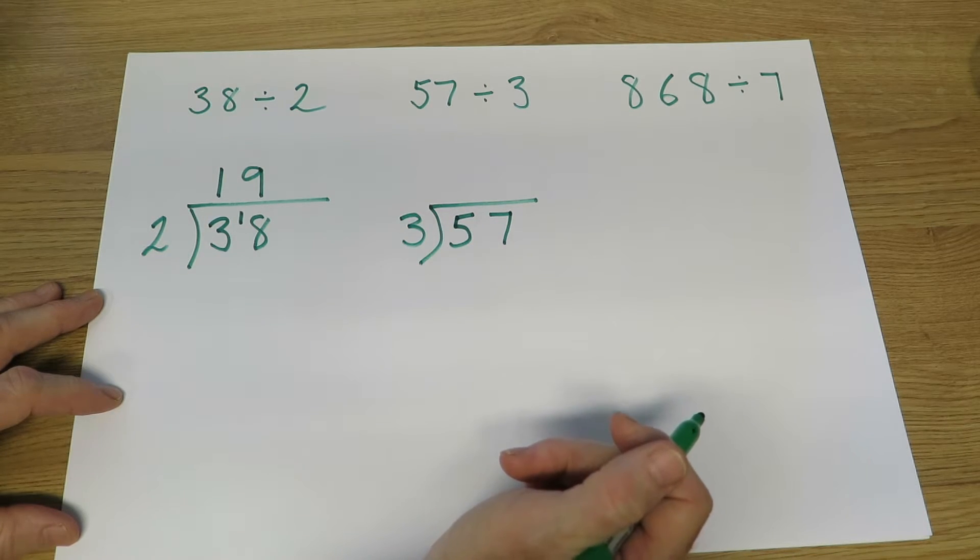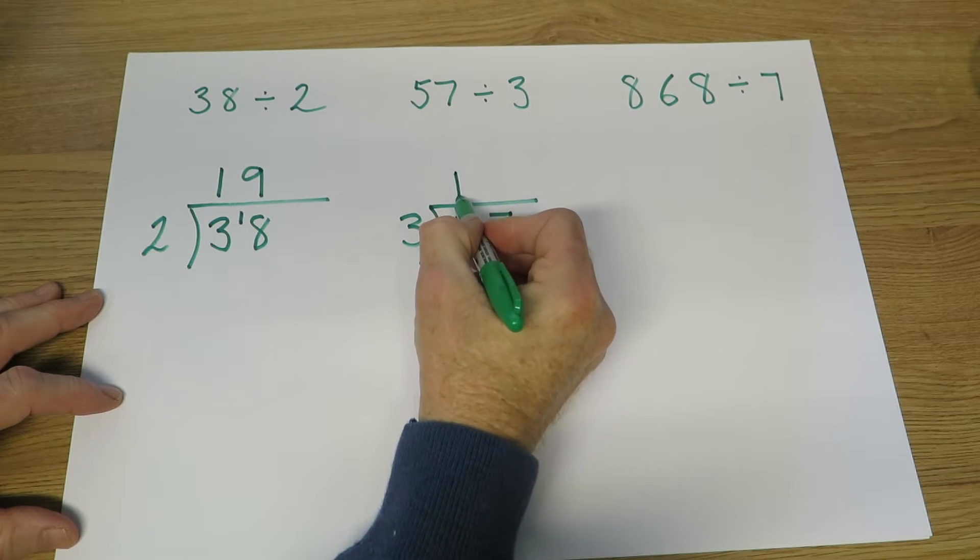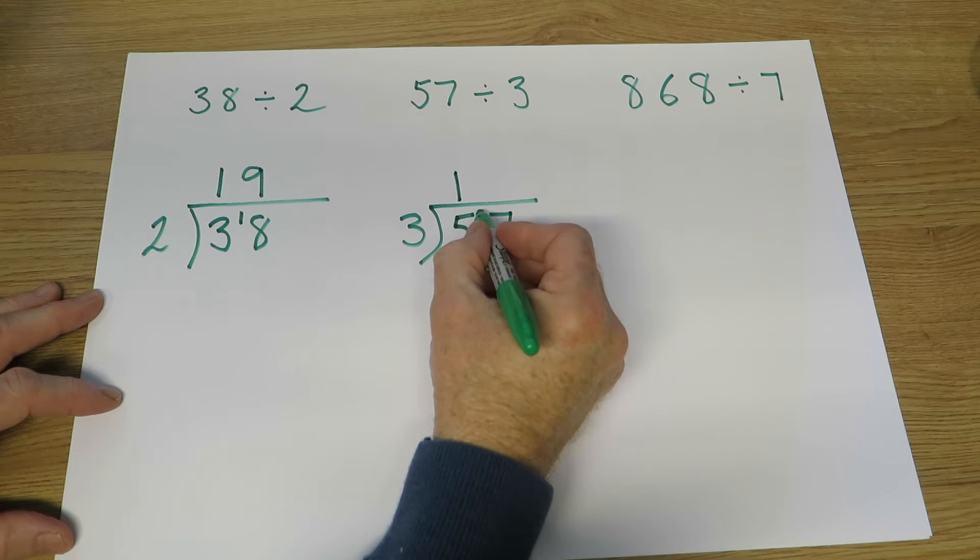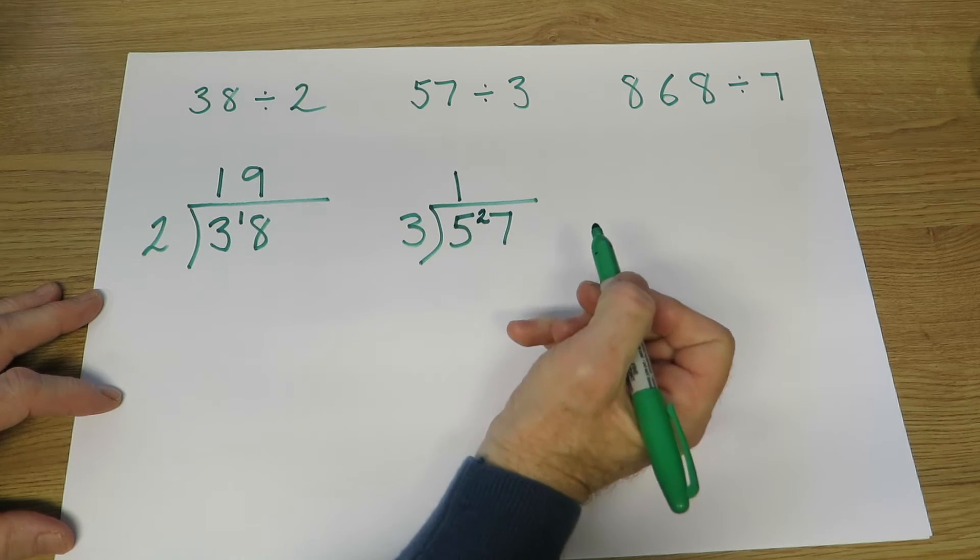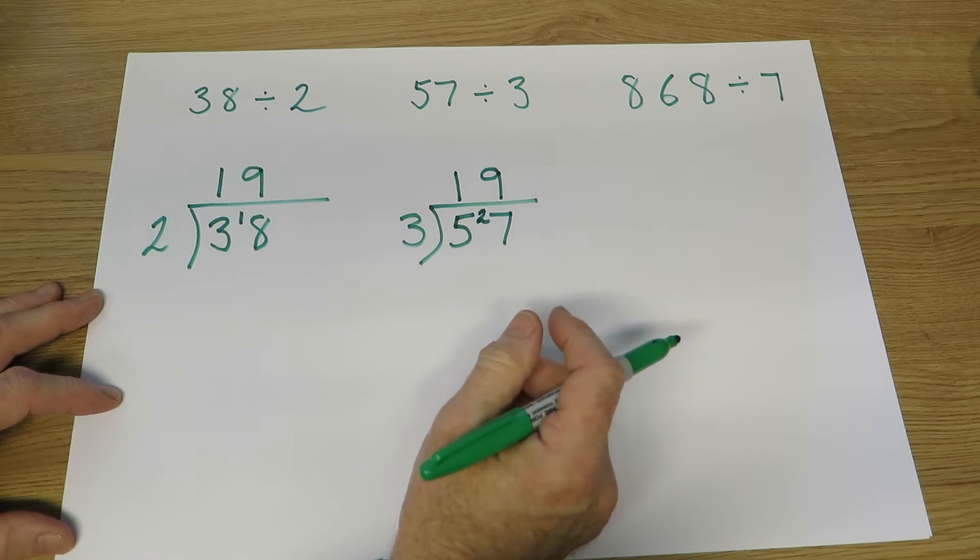57 divided by three. Again, using the shorthand way of speaking, how many threes in five? One. With two tens left over. So we've now got 27. How many threes in 27? That's nine. So 57 divided by three is 19.